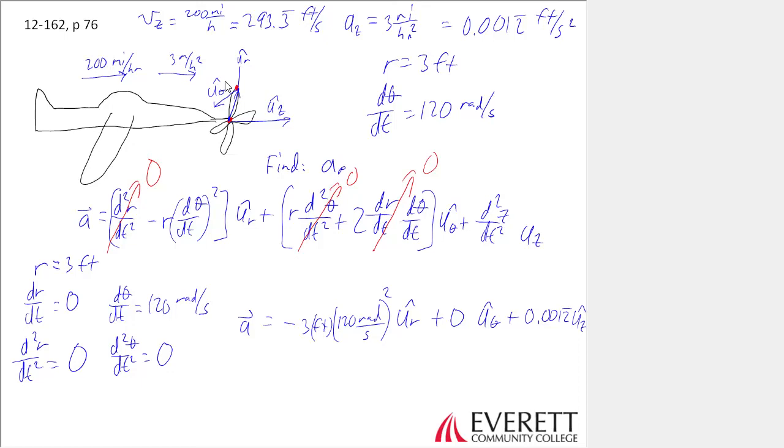We go ahead and do that math. And then if we want the magnitude, it's the square root of the squares, which is negative 43,200 squared plus 0.0012 squared, which is basically 43,200 feet per second squared. Look at the difference here. We got 43,200 feet per second squared because of the propeller rotating and only 0.0012 because of the plane accelerating forward.